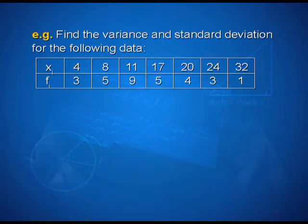Let us take up one more example. Find the variance and standard deviation for the following data. The xi values are 4, 8, 11, 17, 20, 24, and 32, and the corresponding frequencies are 3, 5, 9, 5, 4, 3, 1.